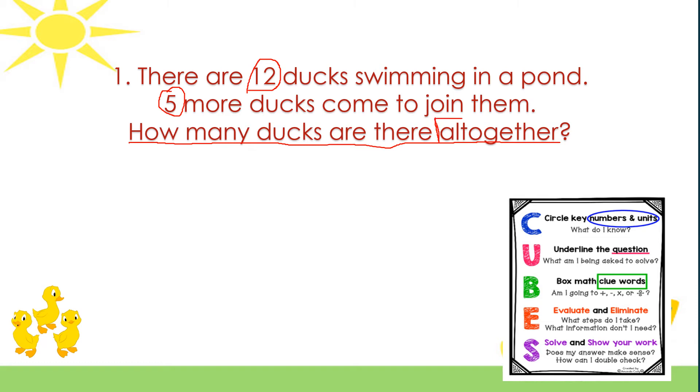B says to box any clue words, and so all together is a clue word. Join is also a clue word. And those clue words, if I was to evaluate them in my next step, tells me that I should add.